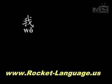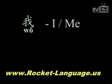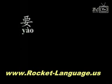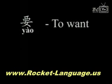我 — 我 means I and me. 你 — 你 means you. 要 — 要 means to want.